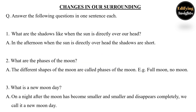Answer the following questions in one sentence each. Question 1: What are the shadows like when the sun is directly over our head? Answer: In the afternoon when the sun is directly overhead, the shadows are short. Question 2: What are the faces of the moon? Answer: The different shapes of the moon are called faces of the moon — for example, full moon and no moon.